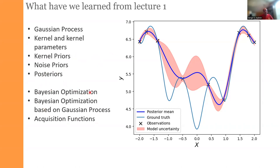We also dived into the concept of Bayesian optimization, specifically Bayesian optimization based on Gaussian processes. Given the predicted function — also known as the surrogate model — and given its uncertainty, we need to find the next promising regions. We can run new experiments where we expect good performance, which is called exploitation, or in locations where we expect high uncertainty, which is called exploration.